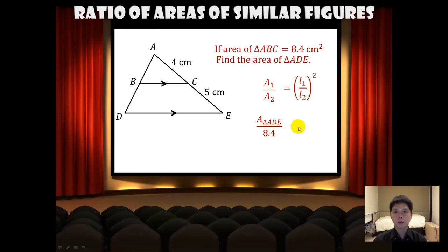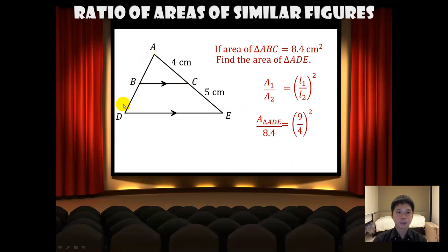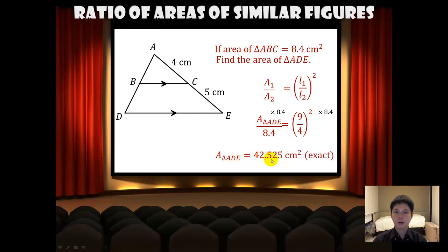L1 over L2 is 9 over 4, so the square of L1 over L2 is the square of 9 over 4. Note that it is not 5, because we are looking at the triangle rather than the trapezium. Multiplying both sides by 8.4, the area of triangle ADE equals 42.525 square centimetres. Because this is an exact answer, we do not need to round to 3 significant figures.